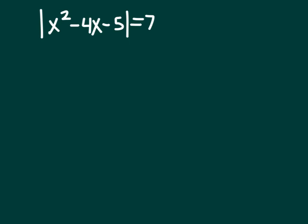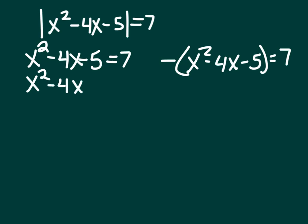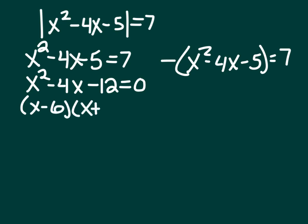One more example: the absolute value of x squared minus 4x minus 5 equals 7 — we've got a quadratic. Same rules apply: split into positive and negative versions. For the positive version, x squared minus 4x minus 5 equals 7; set equal to zero by subtracting 7, giving x squared minus 4x minus 12 equals 0. This factors: we need factors of negative 12 that add to negative 4, which are negative 6 and positive 2. Setting each factor to zero gives x equals 6 and x equals negative 2.